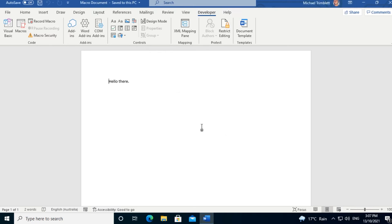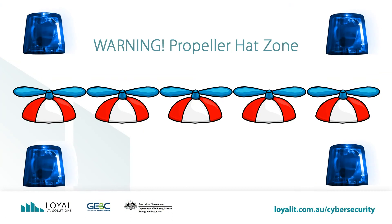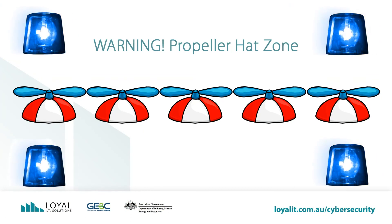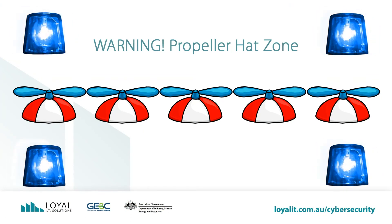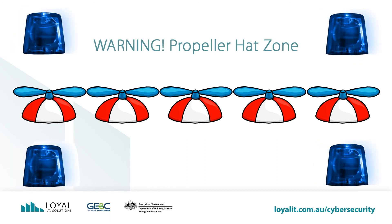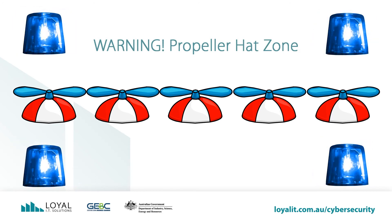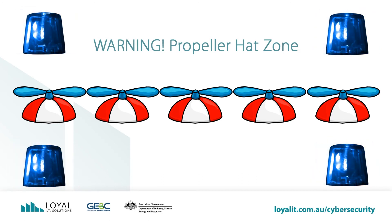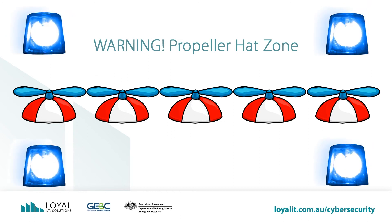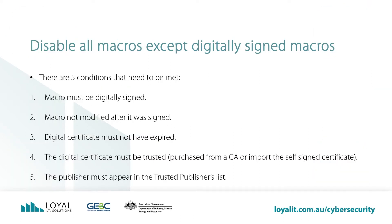This is where we'll leave the One Propeller Hat Zone part of the demonstration, because the next part gets complex. In this Propeller Hat Zone, we're going to look at Microsoft Office Macro Settings: Disable All Macros except Digitally Signed Macros. This gets complex, and if you're not familiar with digital certificates or Active Directory, it's best to call in the IT professionals. This section is rated 5 Propeller Hats out of 5. Before we set up Microsoft Office to disable all macros except Digitally Signed Macros, five conditions need to be met. And these are: 1.